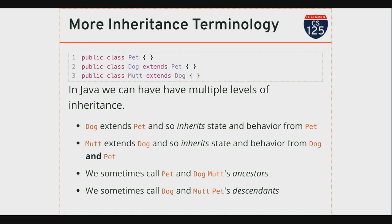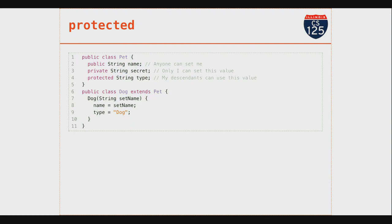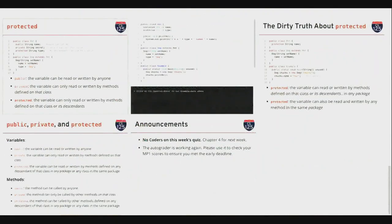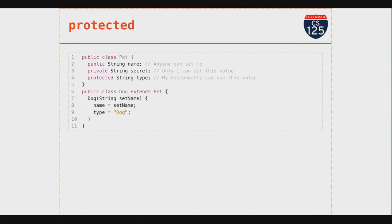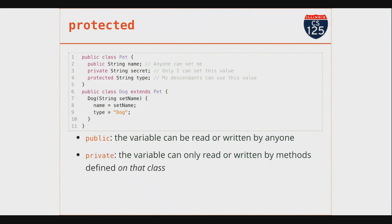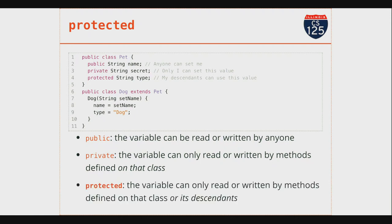The goal behind protected is to allow access to a variable or method to be determined by the inheritance relationship. Public means anybody can read or write the variable. Private means only methods defined on that class. Protected means the variable can be read or written by any descendant of that class — any methods on that class or on classes that descend from it. Protected is actually a little more complicated than that, and we'll continue talking about inheritance on Wednesday.